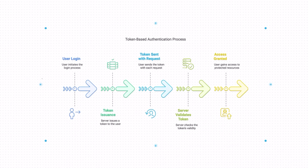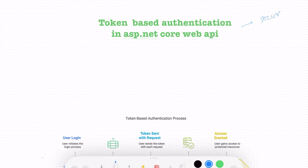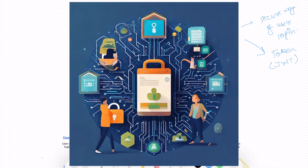So first of all, what is token-based authentication? Token-based authentication is a secure way of handling user login. Instead of storing user sessions on the server, we use something called a token. We'll be learning how tokens work and we'll be taking a special kind of token called a JWT token, which is a very widely used mechanism for securing APIs, mobile apps, and modern web applications.